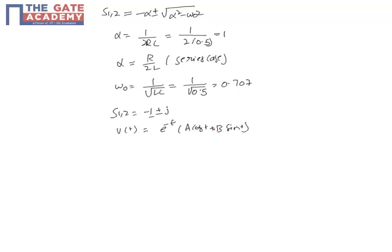We have found the response of the system, that is the voltage across any element. Now we have to use the initial conditions to determine the voltage coefficients. First, let us see what the initial voltage will be.